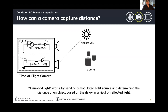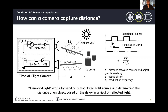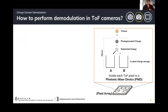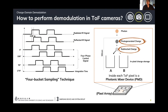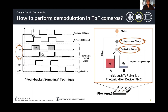One technique to allow cameras to capture depth is called time of flight. Time of flight works by sending a modulated light source into a given scene, and based on the delay of arrival of this light source to the sensor, we can estimate distance information. The time-of-flight camera is composed of a light source and a sensor. This sensor is capable of extracting the phase information or phase delay between the radiated and the reflected IR signal. On a device perspective, we can extract this phase information using a device called photonic mixer device or PMD.